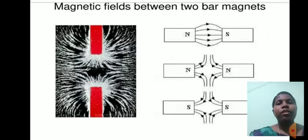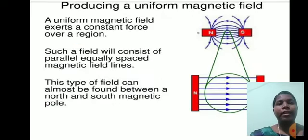These are the magnetic field lines between two bar magnets producing a uniform magnetic field. A uniform magnetic field exerts a constant force over a region. Such a field will consist of parallel, equally spaced magnetic field lines. This type of field can almost be found between north and south magnetic poles.